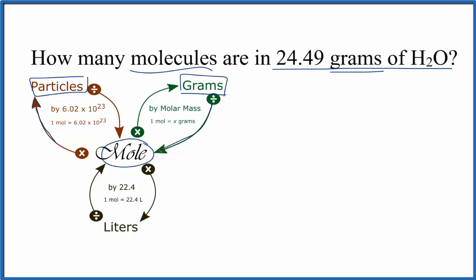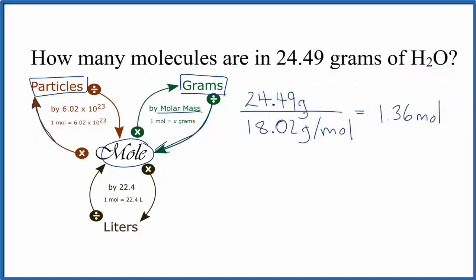When we convert from grams to moles, we divide by the molar mass. So that'll look like this. So we have the 24.49 grams that was given in the problem. We're going to divide by the molar mass of water. That's 18.02 grams per mole. Divide the top by the bottom. Grams cancel out. We end up with 1.36 moles of water.